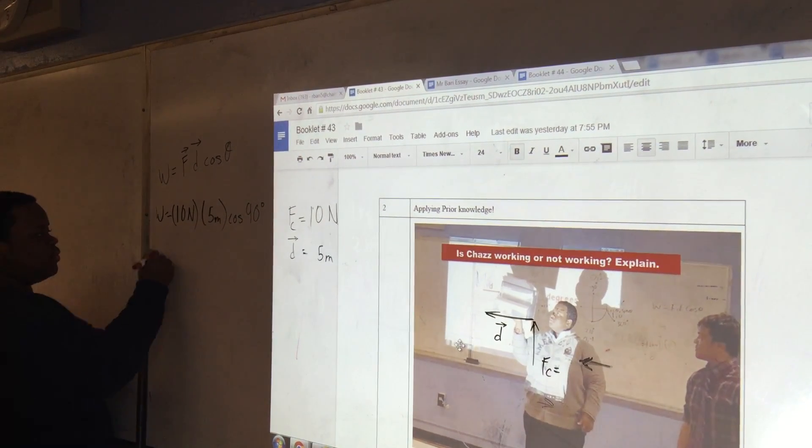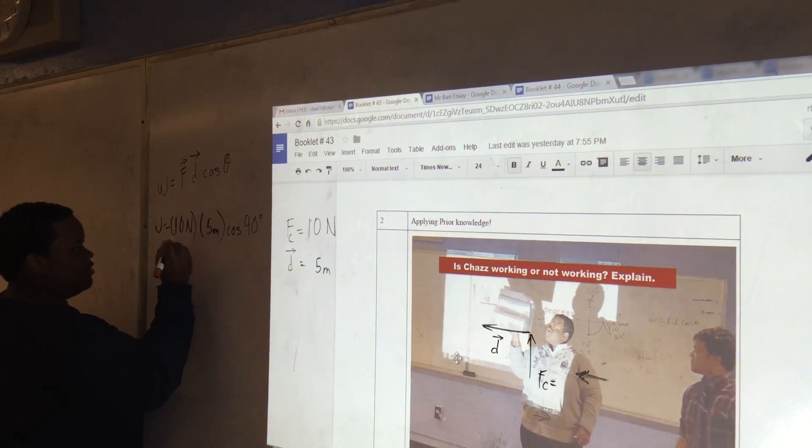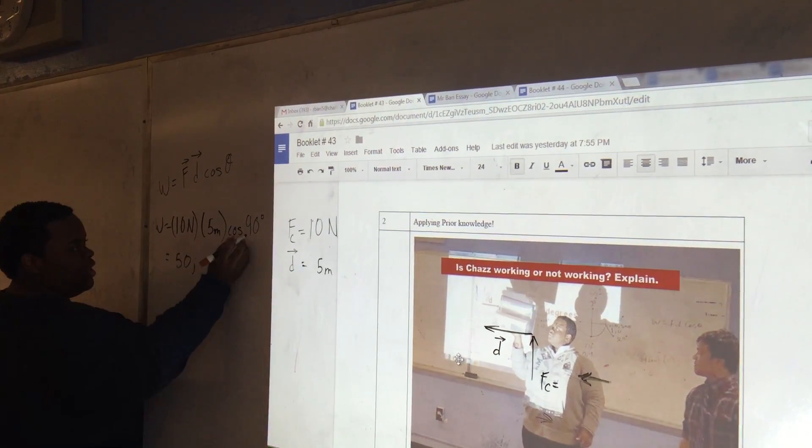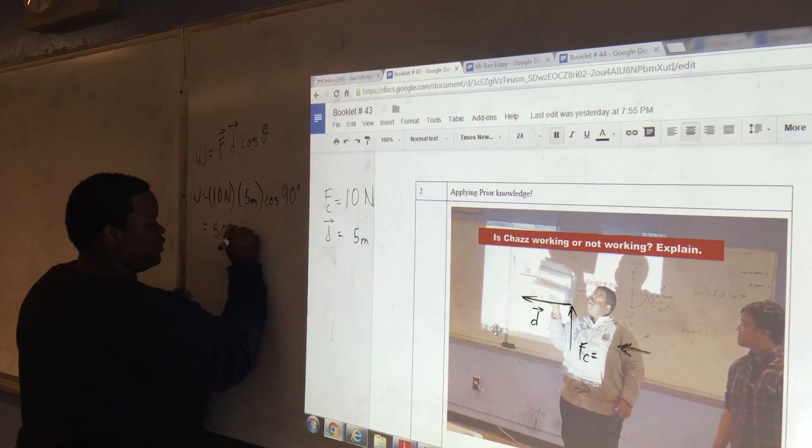So when you multiply this all, you get 0 joules. Chas did 0 joules of work. Thank you.